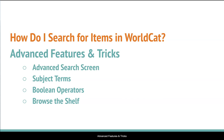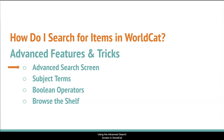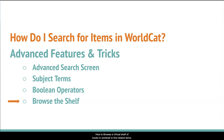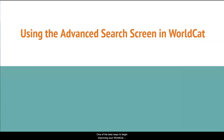How do I search for items in WorldCat, advanced features and tricks? In this video, we will cover four advanced search tricks that will expand user search options in WorldCat. These include using the advanced search screen in WorldCat, searching with subject headings in WorldCat, how to use Boolean operators in WorldCat, and how to browse a virtual shelf of books in WorldCat to find related items.